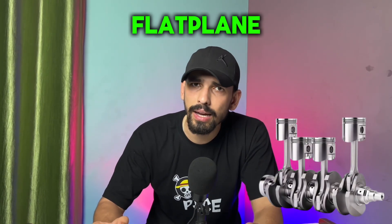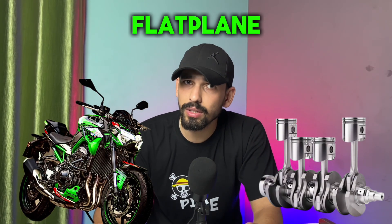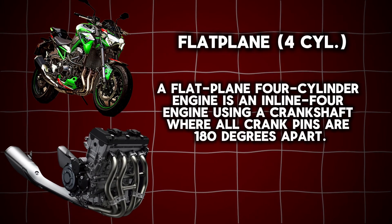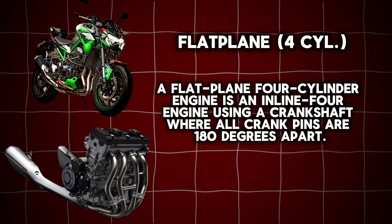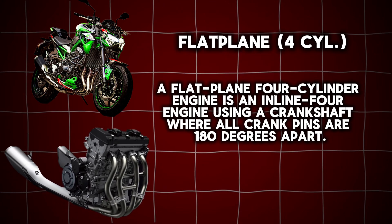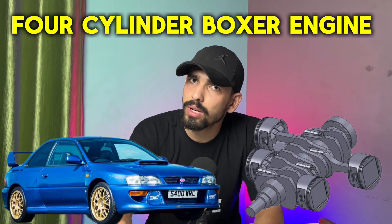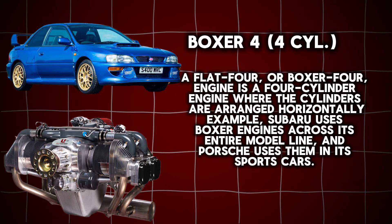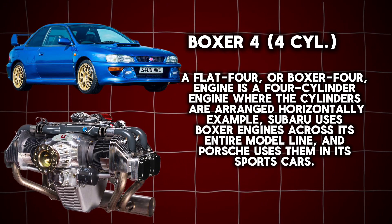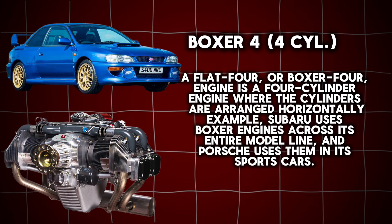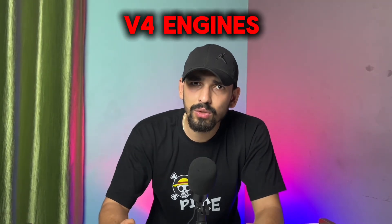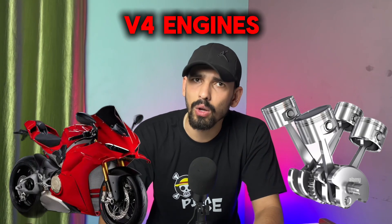And the next one is flat plane. It is mainly used in bikes like the Z900 and Hayabusa — hear what it sounds like. Now comes the 4-cylinder boxer engine, which is mainly used in cars and it sounds like this. And one of my favorite engines is the V4 which is used in Ducati bikes — hear what it sounds like.